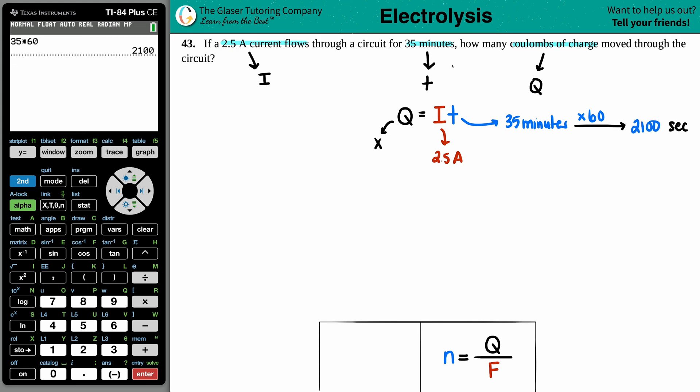Now I'm ready to plug it in. Q equals my i times my t. We have an i value of 2.5 and we have a time now of 2,100 seconds. Let's just calculate this. That times 2.5, and I get 5,250 coulombs, which is capital C.